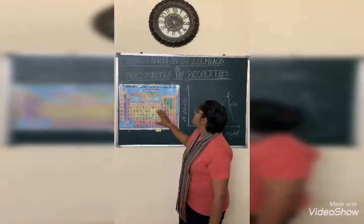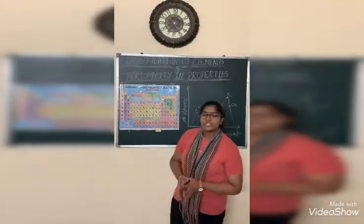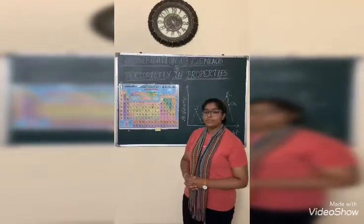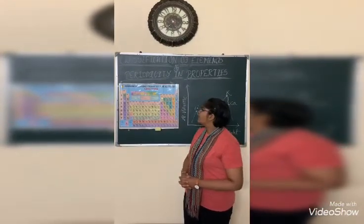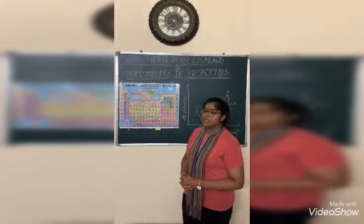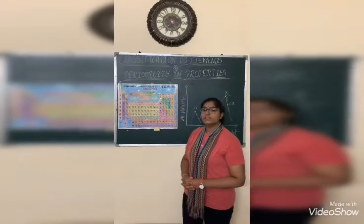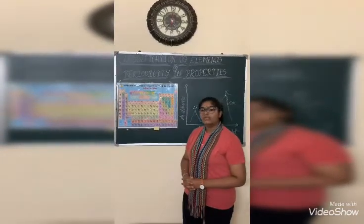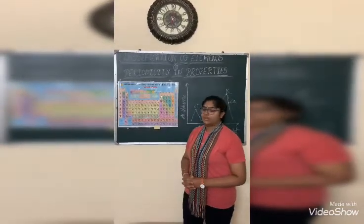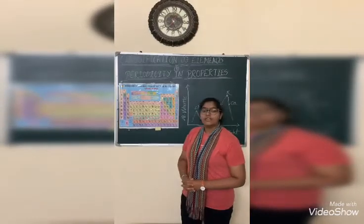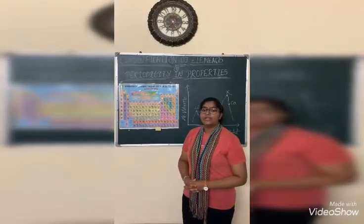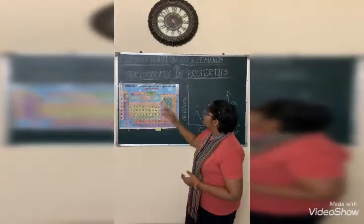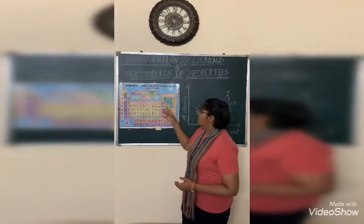First was Lavoisier's concept. Lavoisier said that elements are of two types: metals and non-metals. Metals lose electrons and non-metals gain electrons. But he could not account for metalloids, which have properties of both metals as well as non-metals.